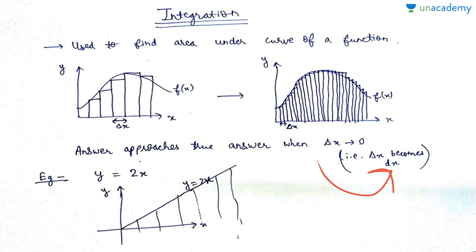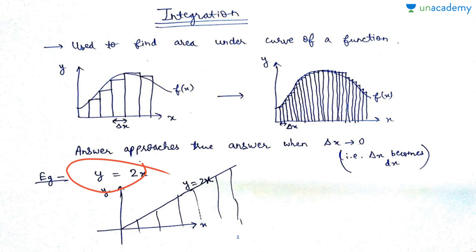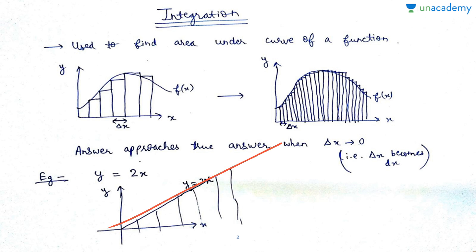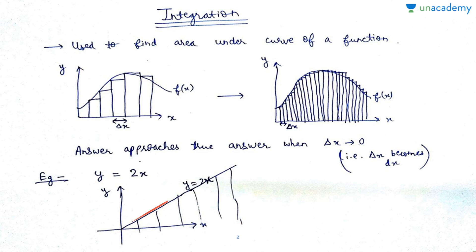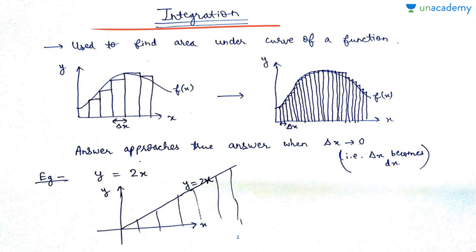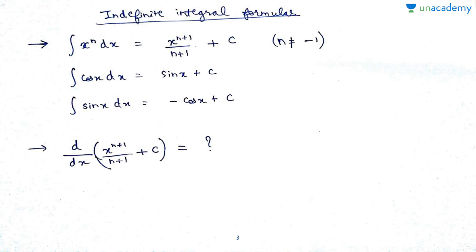For example, take y = 2x. You can plot it on an x-y graph and get a straight line. Now if you want to find the area under this graph without defining limits for x — not from x=2 to x=5, just the general area — that area will be a function of x. As you extend the graph, the area also increases. This is where the formulas for integration come in.